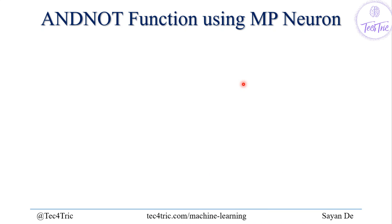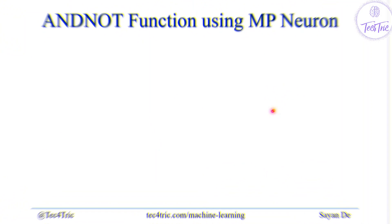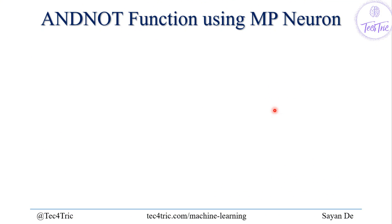In this video we are going to talk about how to implement the AND-NOT function using McCulloch-Pitts neuron. I am Shan and you are watching Tech for Trick. Let's get started.